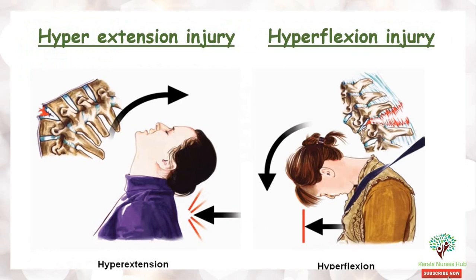Here you can see hyperextension injury and hyperflexion injury. In hyperextension injury, because of the severe extension of the head or the spinal canal, the posterior ligament is getting damaged. Whereas in hyperflexion injuries, the anterior ligament is getting elongated and ruptured.